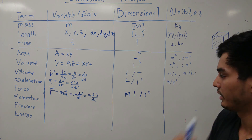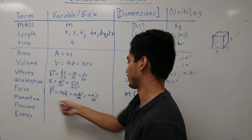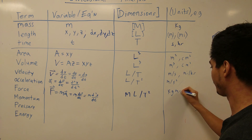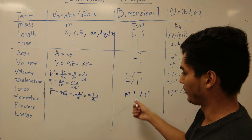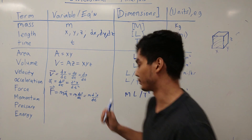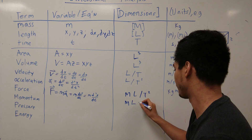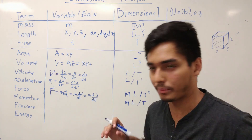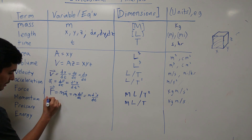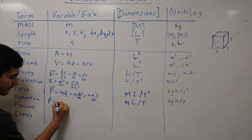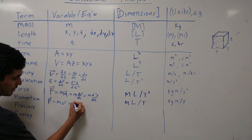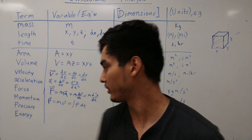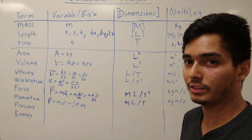For momentum, think of it in relation to force: where force uses acceleration, momentum uses velocity. Momentum p (as a vector) equals mass times velocity, or equivalently the integral of force with respect to time. So the dimensions are mass times length per time, with units of kilograms times meters per second. Note that momentum can be written as a function of force as a function of time.